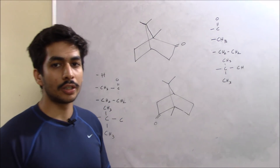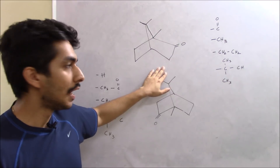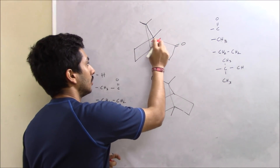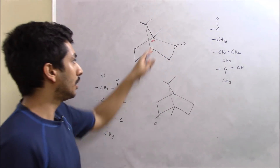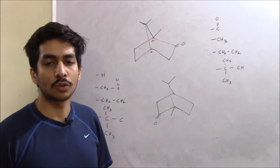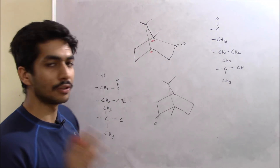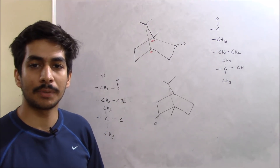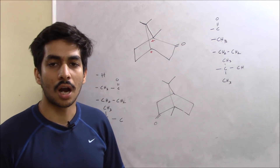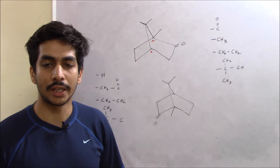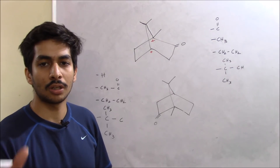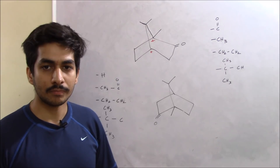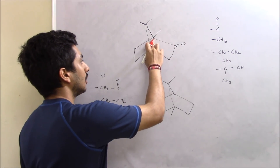This topic was requested by Sapna — thank you for that. Since it hasn't been seen for a long time, I'm expecting it could appear in upcoming entrance exams. R/S configuration in these compounds is a little different, though not difficult at all. Now, this is the structure of camphor. It has two chiral centers marked with a star. The prerequisite knowledge you need is the Cahn-Ingold-Prelog priority rules.